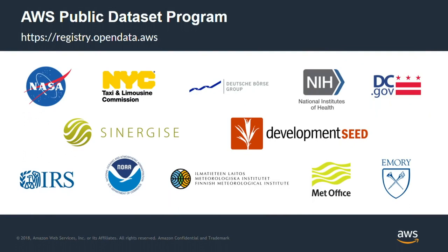I work for Amazon Web Services on the open data team. Part of my job is to oversee our public dataset program, in particular the geospatial datasets. We work with a lot of awesome customers to make data available in the cloud in smart ways that make it easy to analyze — as opposed to traditional approaches that require you to download massive amounts of data to your own computer and work with not necessarily friendly formats.